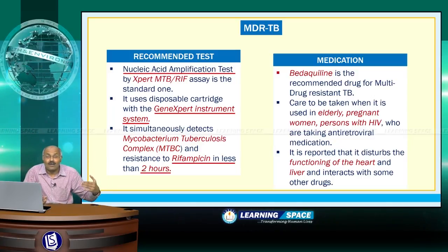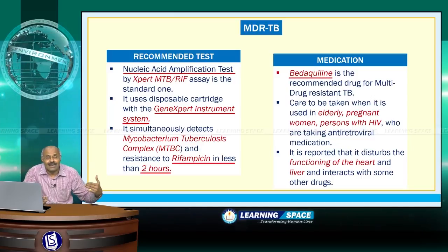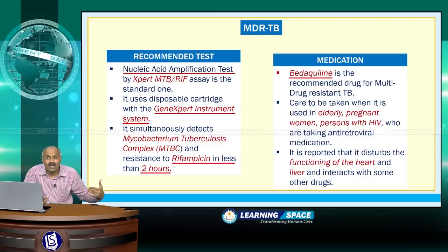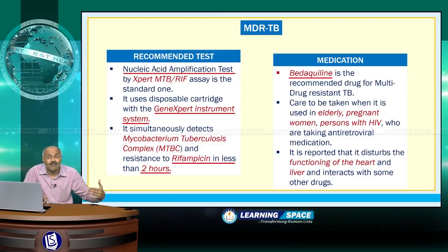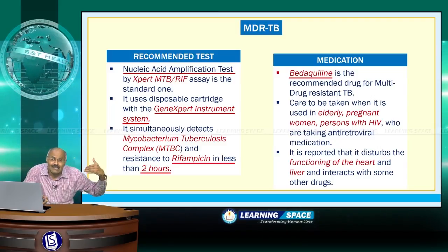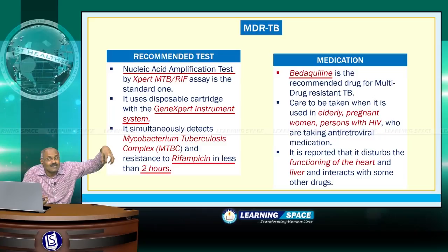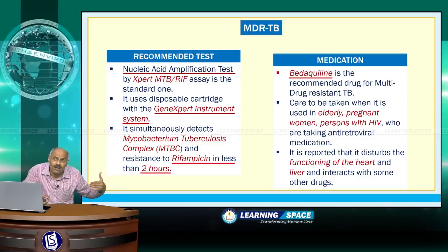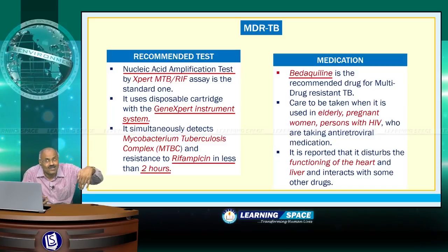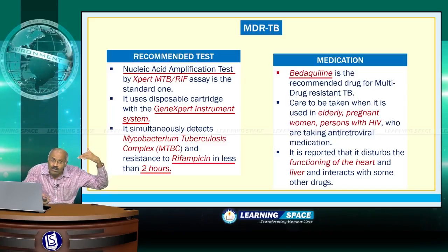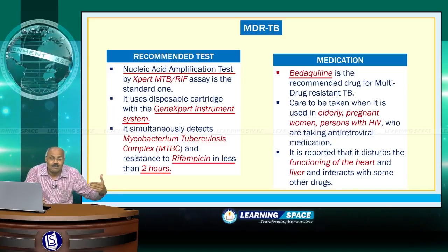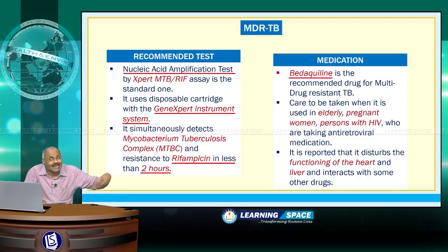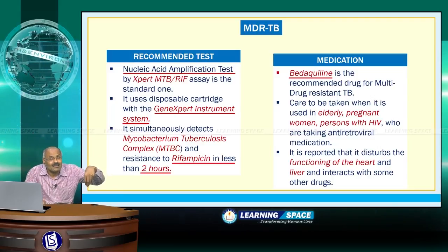The recommended drug for multi-drug resistant TB is bedaquiline. Care must be taken when it is used in elderly persons, pregnant women, persons with HIV, or whoever is taking anti-retroviral medication. It is also reported that bedaquiline disturbs the functioning of the heart and the liver, and it interacts with some other drugs.